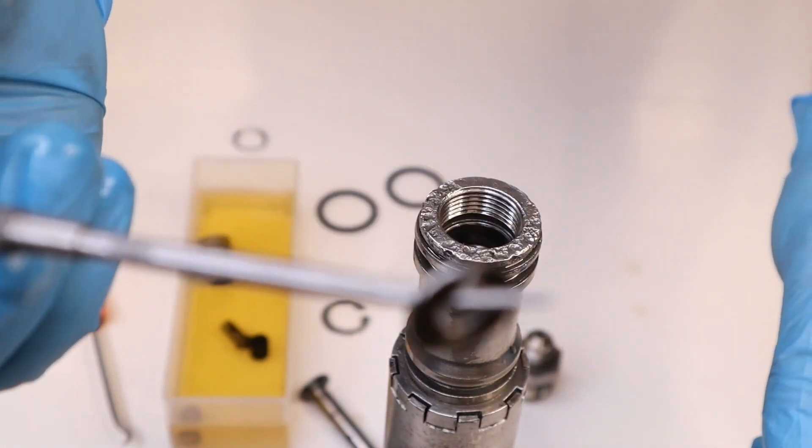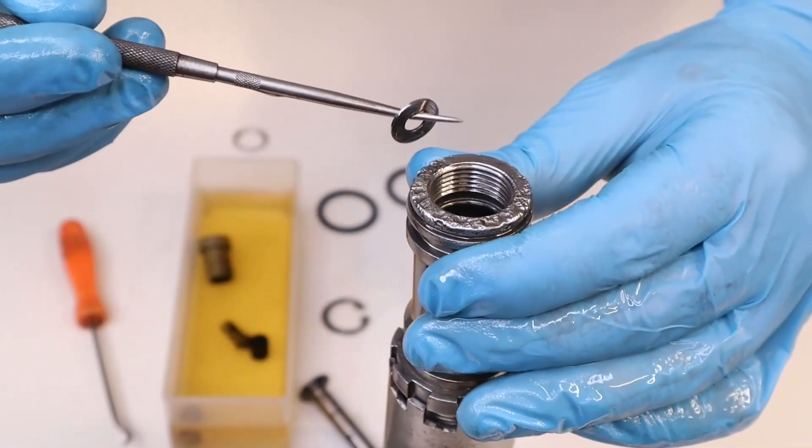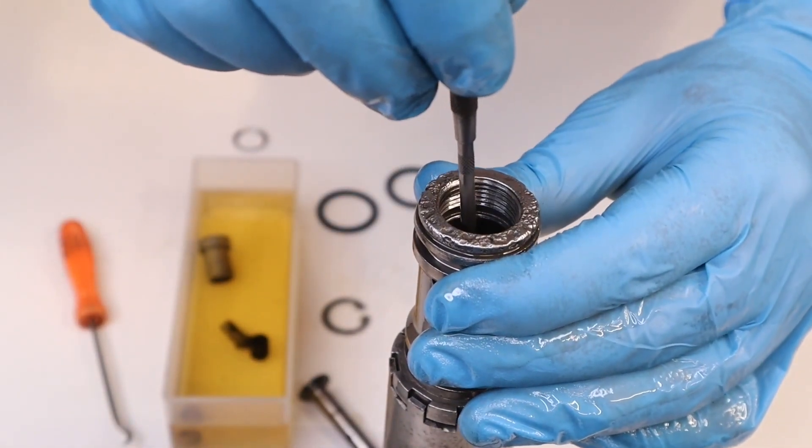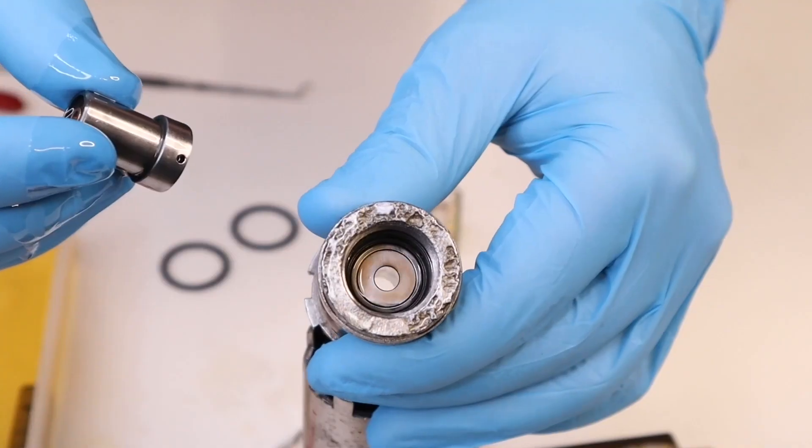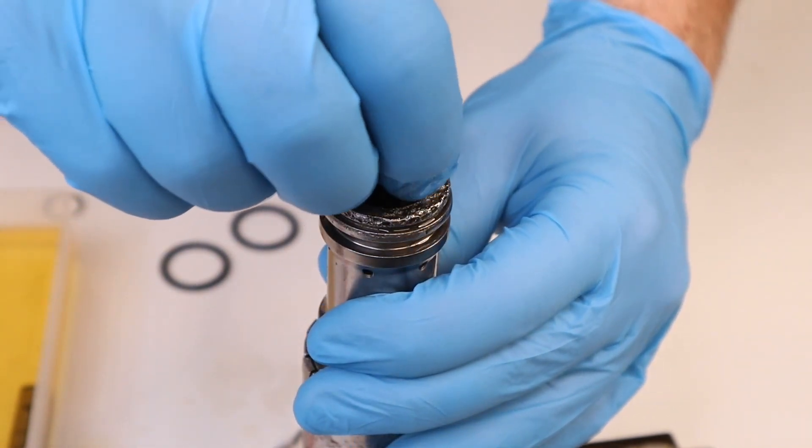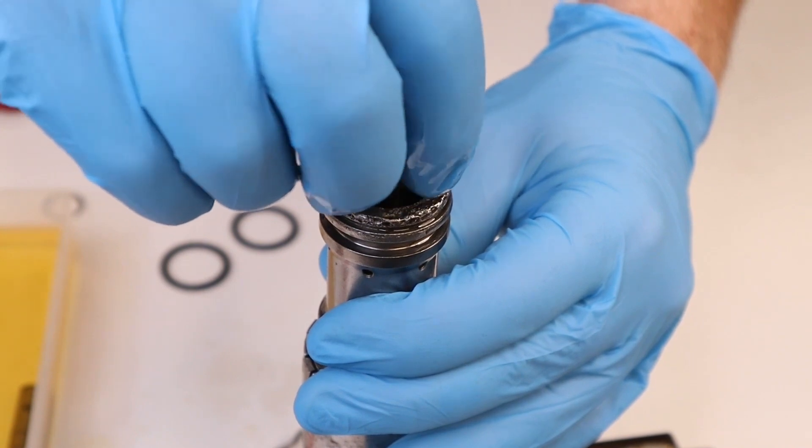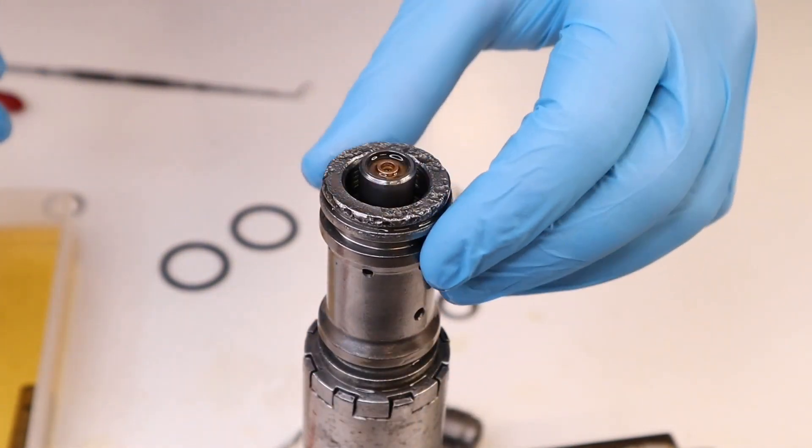Now the valve washer. That sits on top of the sprung washer. It has to be central and it can come adrift. So when you put the one-way valve in you have to make sure that it's sitting on the spacer washer and that the other two washers are central underneath it.